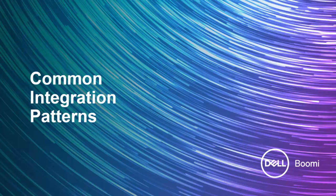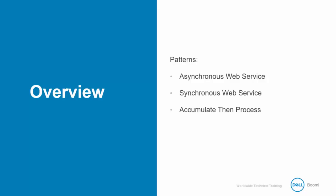In this module we are going to look at three patterns to common Boomi sphere integrations: synchronous web service, asynchronous web service, and accumulate then process, also known as queuing.